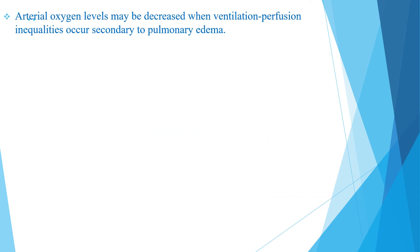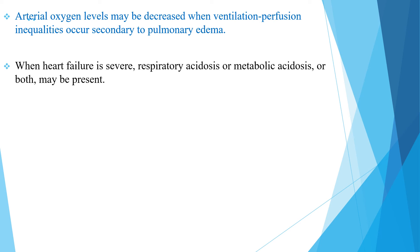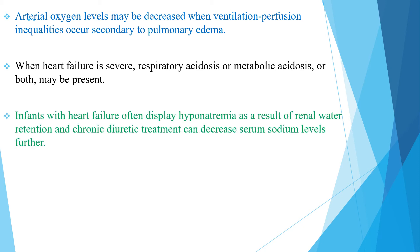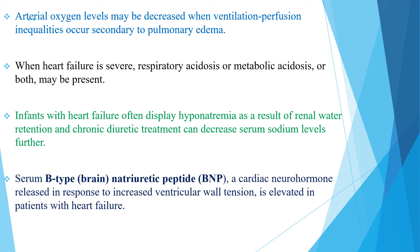Arterial oxygen levels might be decreased when ventilation-perfusion inequalities occur secondary to pulmonary edema. When heart failure is severe, respiratory acidosis, metabolic acidosis, or both might be present, so obtaining an ABG is important. Infants with heart failure often display hyponatremia as a result of renal water retention, and chronic diuretic treatment can decrease serum sodium levels further. Serum B-type natriuretic peptide (BNP), a cardiac neurohormone released in response to increased ventricular wall tension, is elevated in patients with heart failure and can help differentiate cardiac from pulmonary causes of respiratory distress.